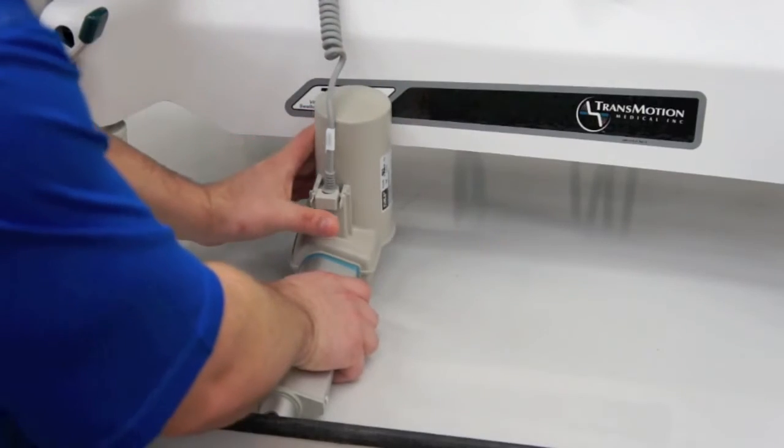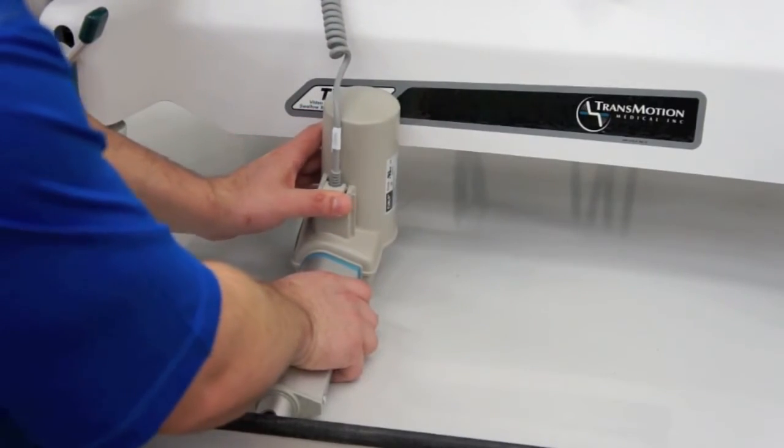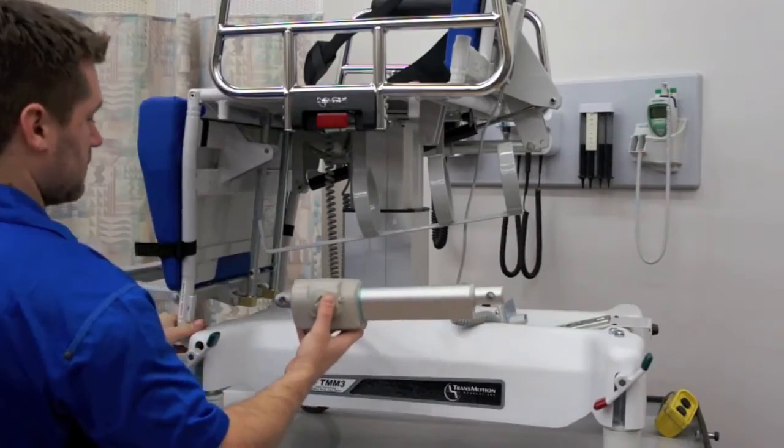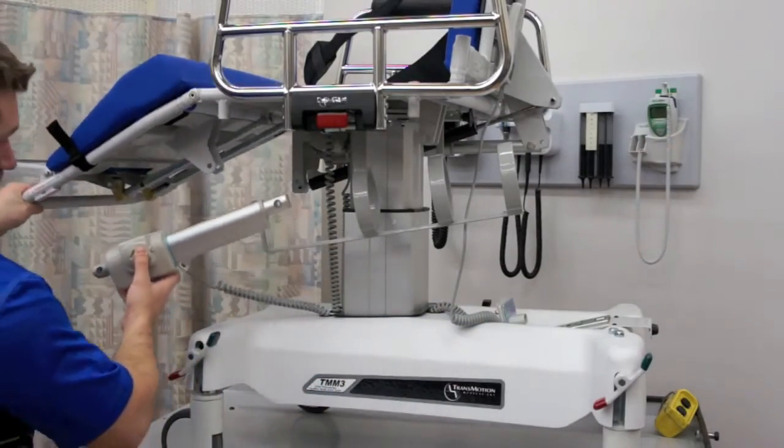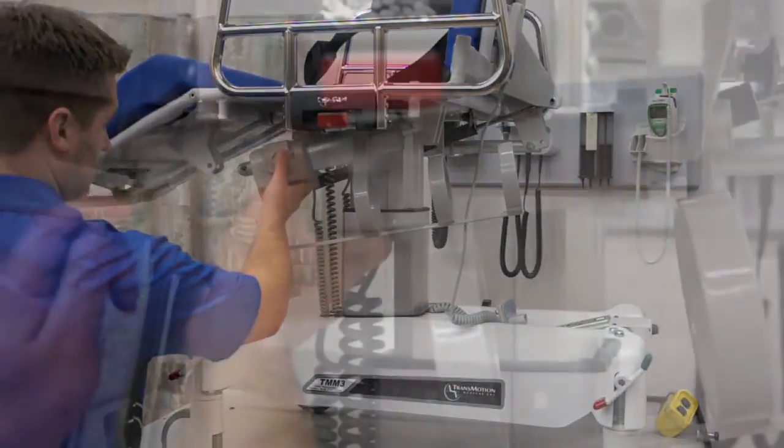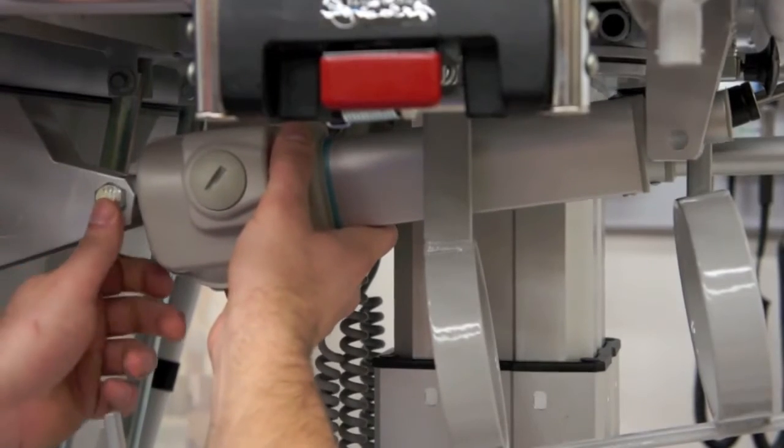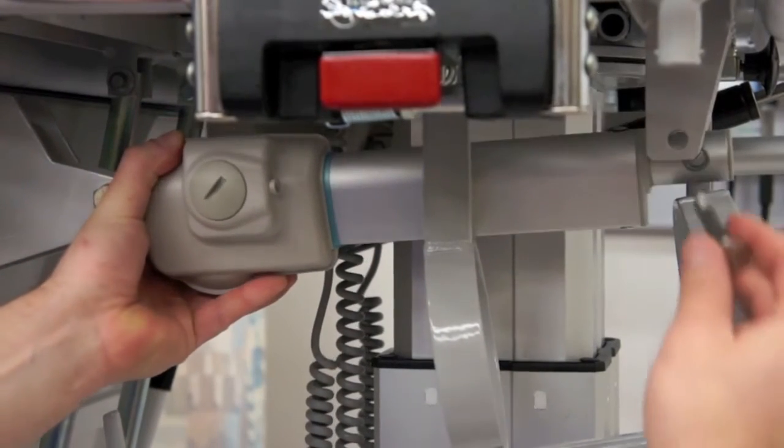Connect the new actuator and lock the retaining clip. Lift the leg section and slide the actuator with the motor side facing the column of the chair. Insert the bolts to the front and rear part of the actuator.